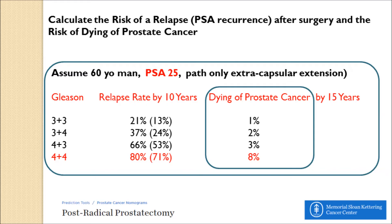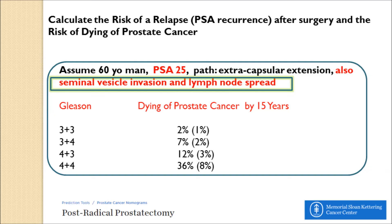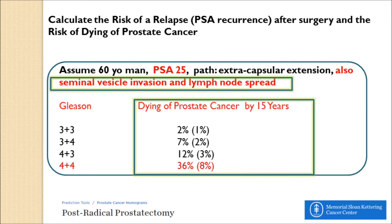If everything goes wrong — the cancer has invaded the seminal vesicles and lymph nodes, with a high Gleason and a high PSA of 25 — then the risk of dying does go up significantly, moving from 8% to 36%. This calculator alone shows the importance of all three factors: the PSA, the level of spread, and the Gleason grade or score.